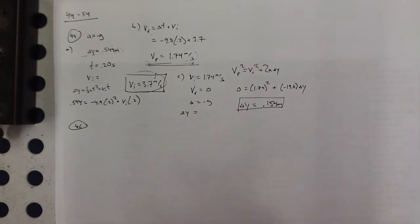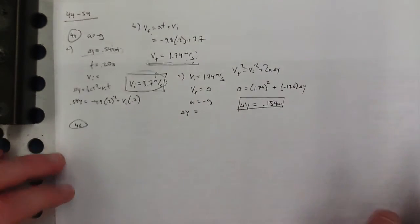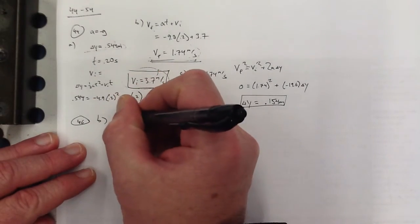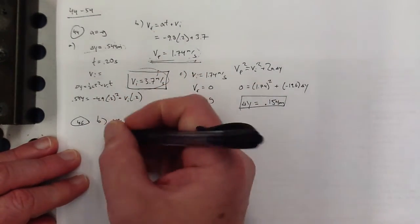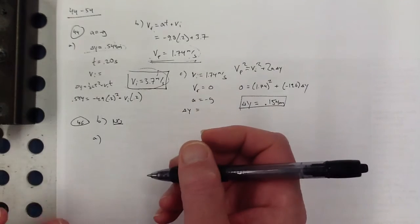All right. Good. They kept one more digit on that. Why not? All right. 46. Raindrops fall 1,700 meters from a cloud to the ground. If they were not slowed by air resistance, how fast would the drops be moving when they struck the ground? And then B, would it be safe to walk? I'm just going to go ahead and answer part B right now. No. Not safe.